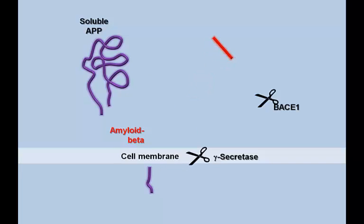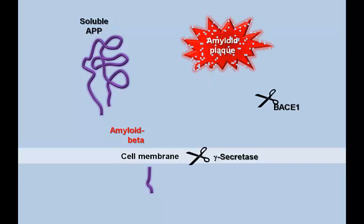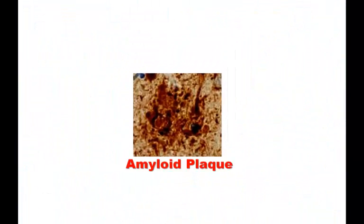Many amyloid beta peptides, plus other extracellular proteins and components, aggregate together to form the amyloid plaques that characterize cells in the Alzheimer's brain.